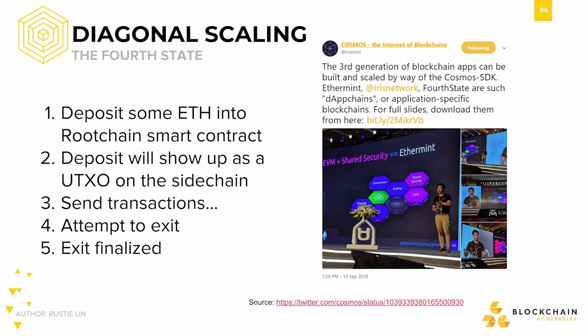Here's a picture of our team getting a well-deserved shoutout at the Fourth Global Blockchain Summit 2018. We consider Plasma a diagonal scaling solution because it scales up the number of Ethereum transactions that the network can handle by bringing the transactions off the main chain onto child chains.